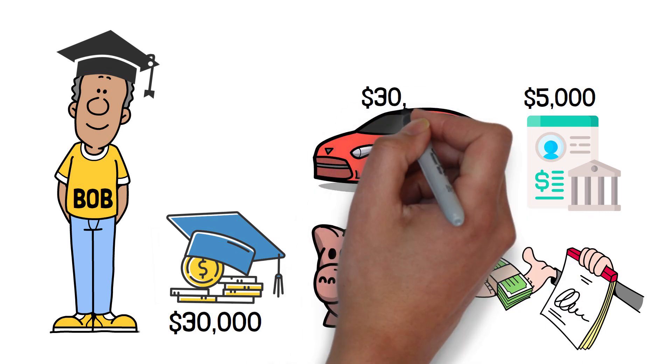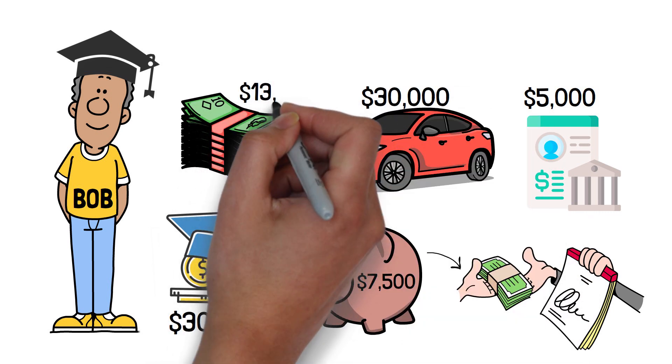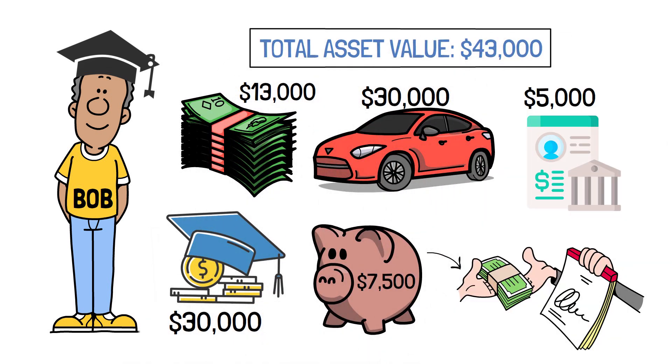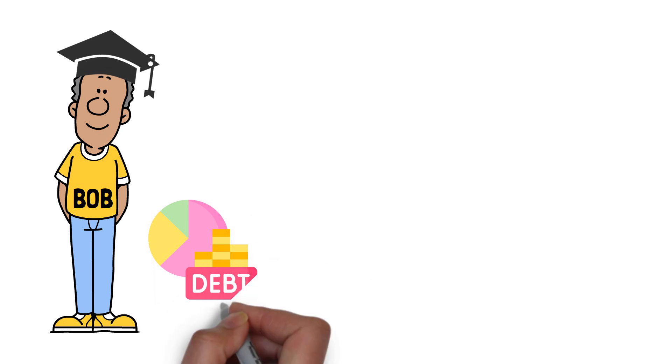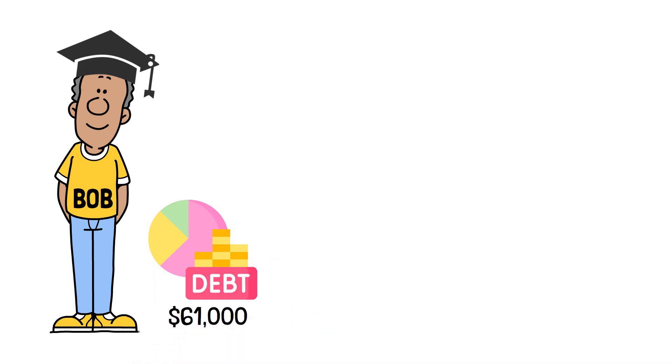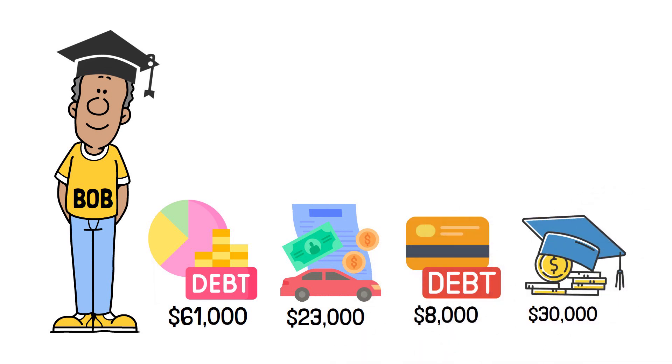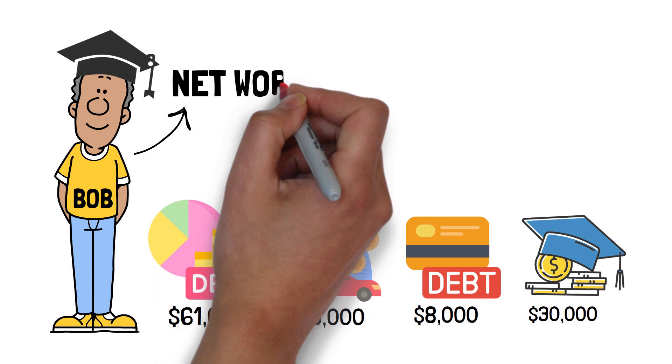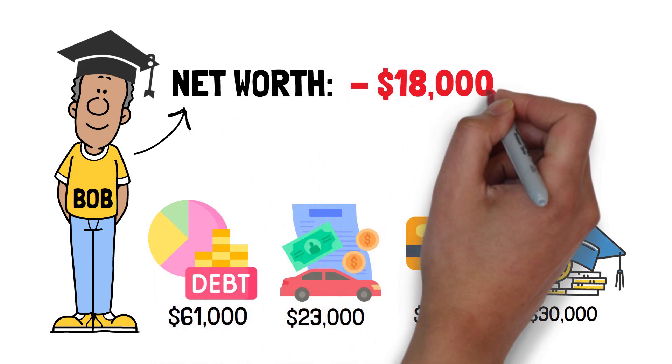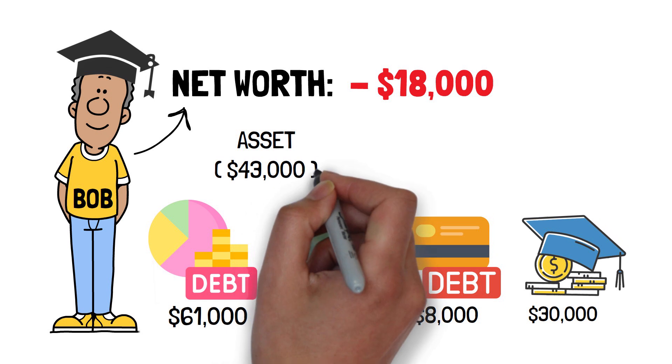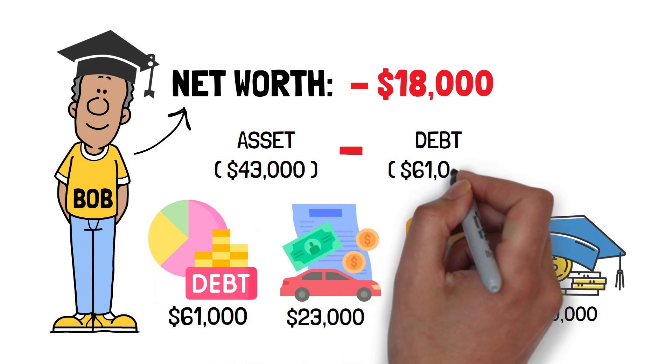He possesses a $30,000 car and $13,000 in cash for a total asset value of $43,000. Debts total $61,000 with $23,000 remaining on the auto loan, $8,000 in credit card debt, and $30,000 in college loans. Bob's net worth is negative $18,000 after subtracting his assets of $43,000 from his debt of $61,000.